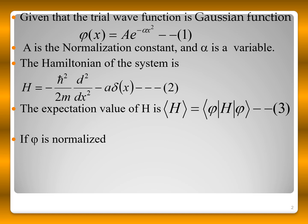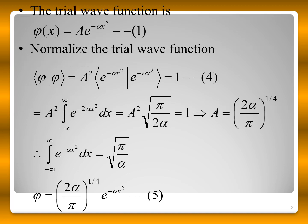The Hamiltonian is given, and the expectation value is computed as in equation 3 if φ is normalized. We normalize the trial wave function by equating it to 1 and finding the normalization constant, giving φ = (2α/π)^(1/4) · e^(−αx²) as the normalized trial wave function.